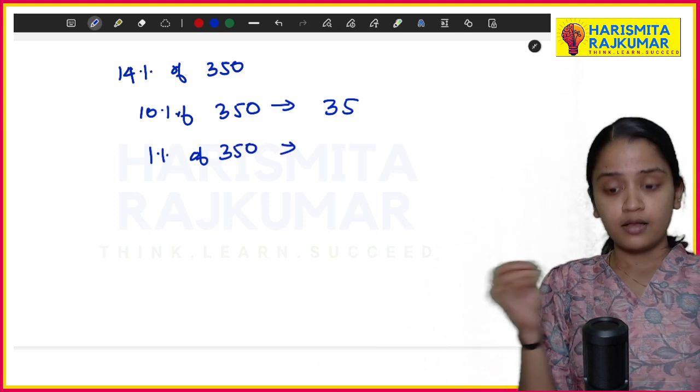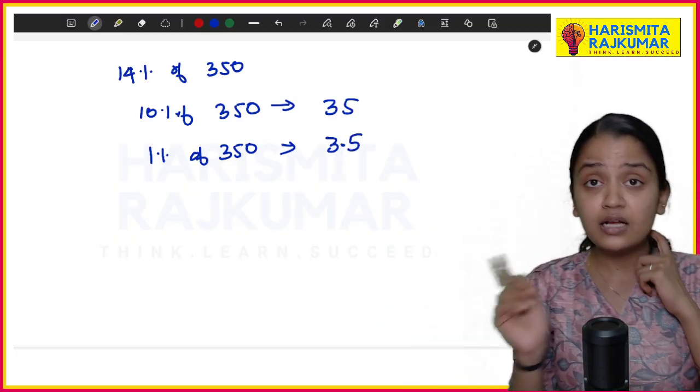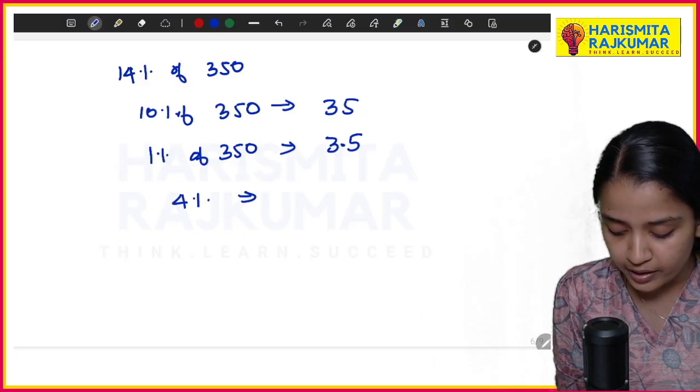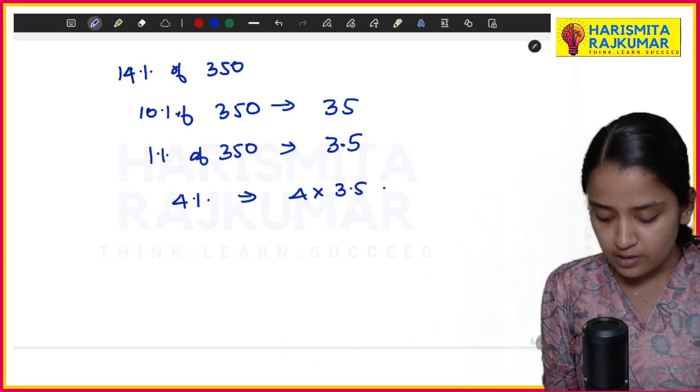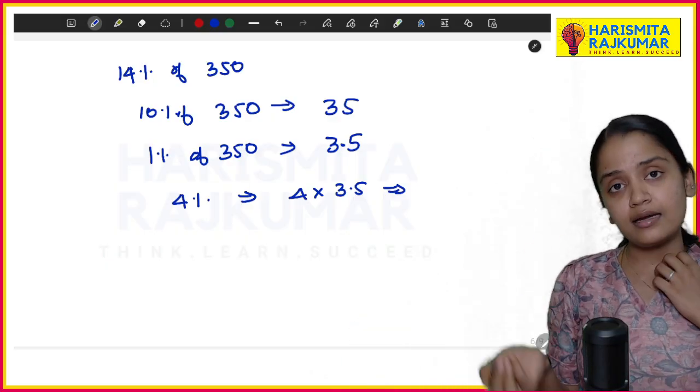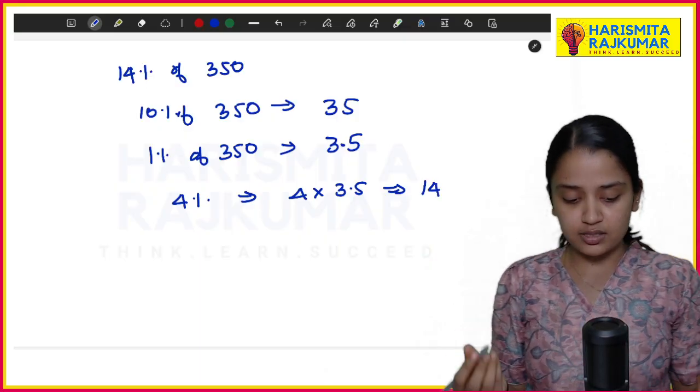10% of 350 is 35. 1% of 350, what I'm getting? 3.5. Then 4%, what I'm doing? 4 × 1% is my 4%. So basically it is 3.5 + 3.5 is 7, and 7 + 7 is 14. So 14 is your answer.